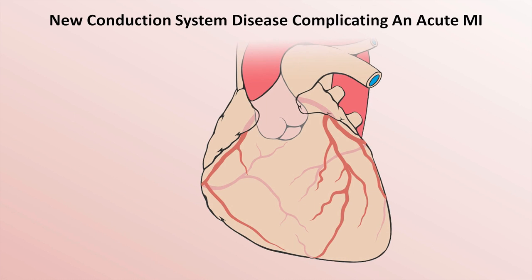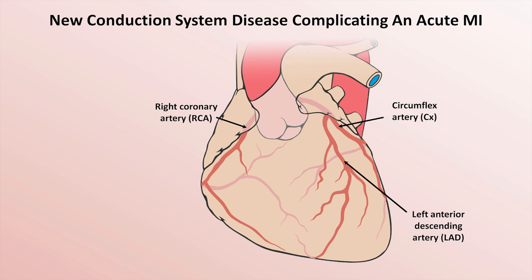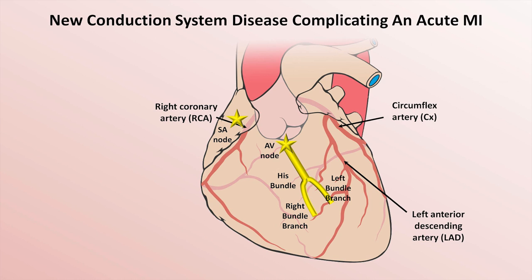I'll start with new conduction system disease and a review of the blood supply to the conduction system. We have the right coronary artery, circumflex, and LAD. The main components of the conduction system are the SA or sinus node, the AV node, the HIS bundle, and the right and left bundle branches. The blood supply to the conduction system is more variable, possibly more redundant, and generally not as well established as the blood supply to the myocardial walls. However, this is what is known.